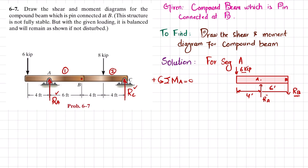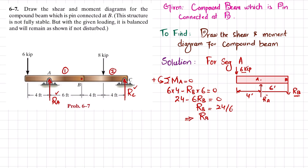About point A: 6 × 4 is counterclockwise (positive), and RB × 6 is clockwise (negative). So: 6×4 − RB×6 = 0, giving 24 − 6·RB = 0, therefore RB = 24/6 = 4 kips.